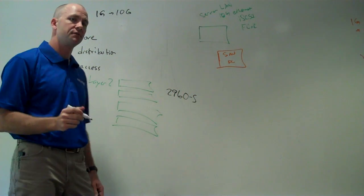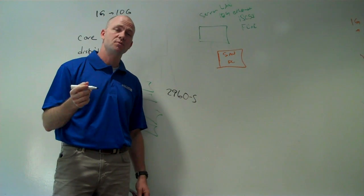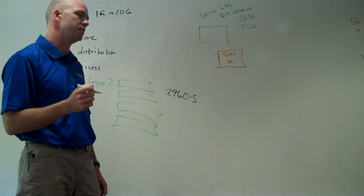So the switch I prefer for access layer switching is the Cisco 2960S. So the 2960-S is a flexible type switch. It comes with a lot of different capabilities. And so let's talk about what some of those capabilities that you're going to want in an access layer switch are.